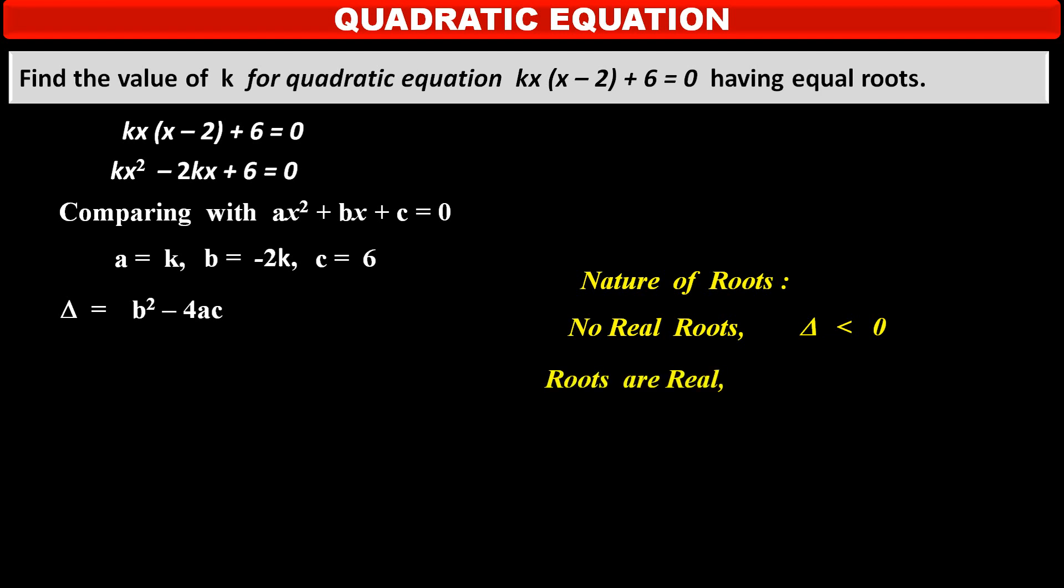If roots are real numbers, then value of discriminant delta is greater than or equal to 0. Again, there are two options. If it is strictly greater than 0 or equal to 0.